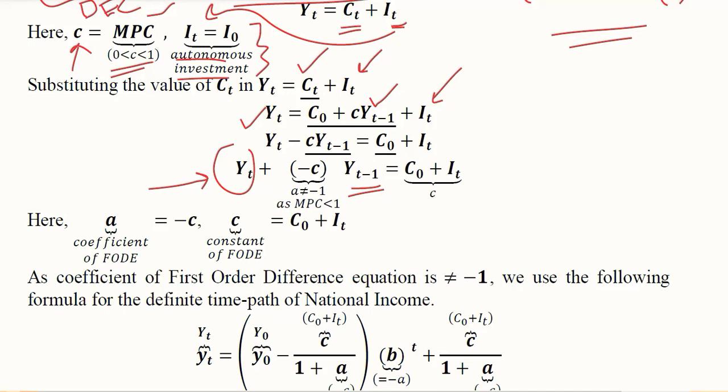However, it's lacking one thing. In first-order difference equations we have yt+1 plus a·yt equals c. So here we can introduce +1 in the subscript, making it Yt+1.